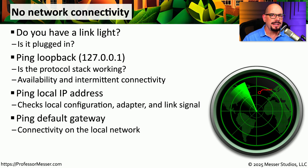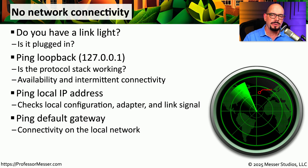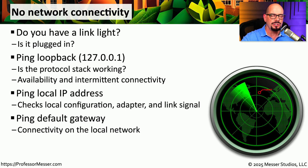Now let's try pinging a device that is somewhere else on our local network. Since most local networks have a default gateway, that's a perfect IP address to try. Check the IP address configuration of your computer where it says default gateway, and try pinging that IP address. That will confirm that you're able to ping from your device to another device on your local network and receive the response.